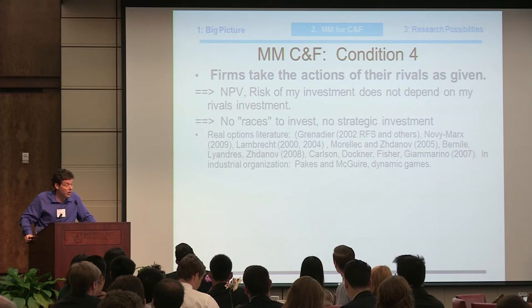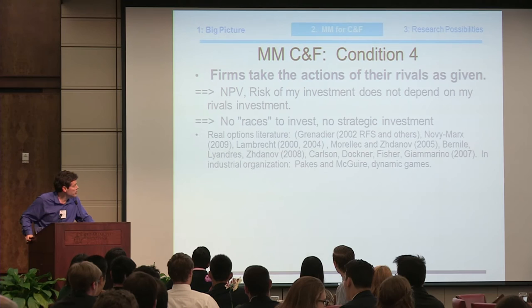Condition four is that firms take the actions of their rivals as given. In many cases that's not going to be true, but that's what we assume when writing down a net present value — that the risk of the investment doesn't depend on rivals, and I just calculate the betas and discount rate without directly accounting for rivals' actions. This means there are no races to invest, no strategic investment where I invest more to preempt my competitor from investing. There are many models in economics which talk about these races to invest — investing more partially just to make sure the competitor invests less. There's a large literature on real options which shows competition matters in calculating the value of real options and investment decisions.